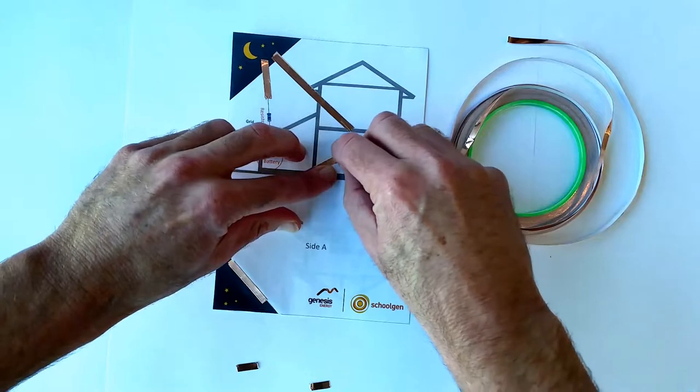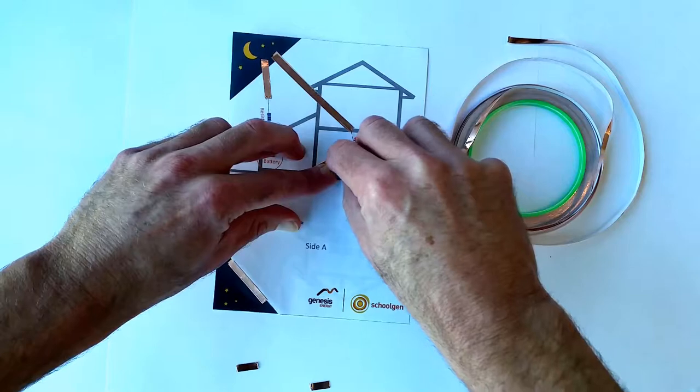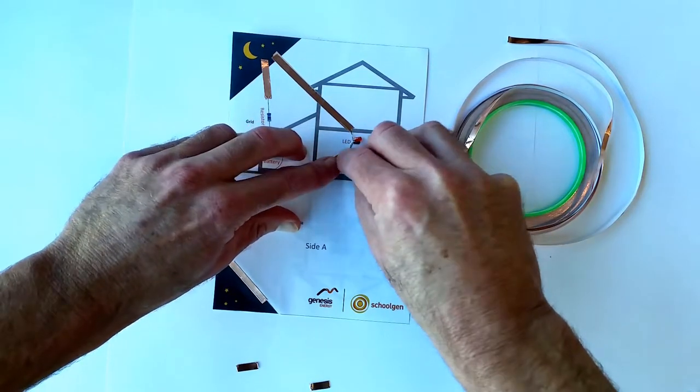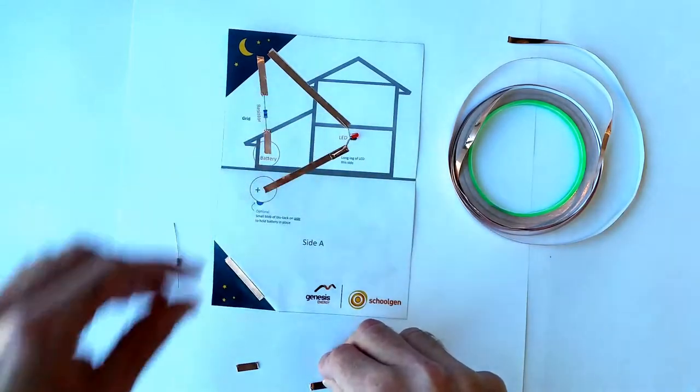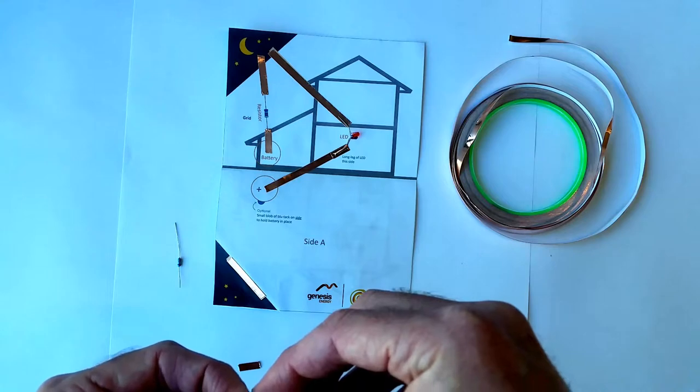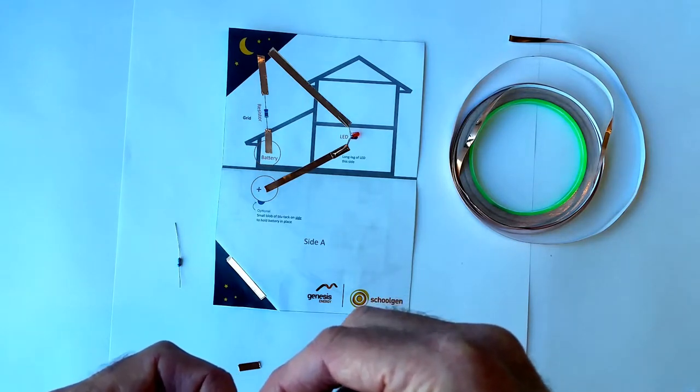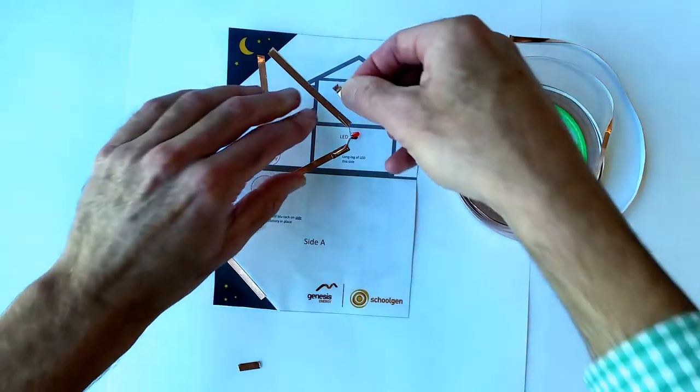You can see that's now covering up the positive leg of the LED. I'm just using my fingernail to smooth it down, push it down, so it makes hopefully a good connection. If your circuit doesn't work, this is the thing to check—that it has a good connection with the underlying copper.